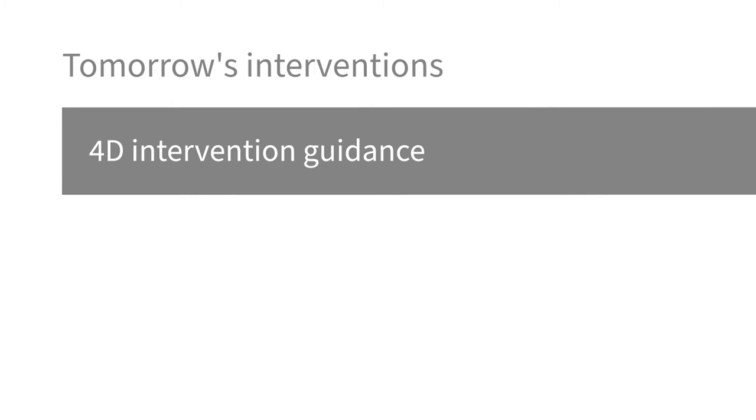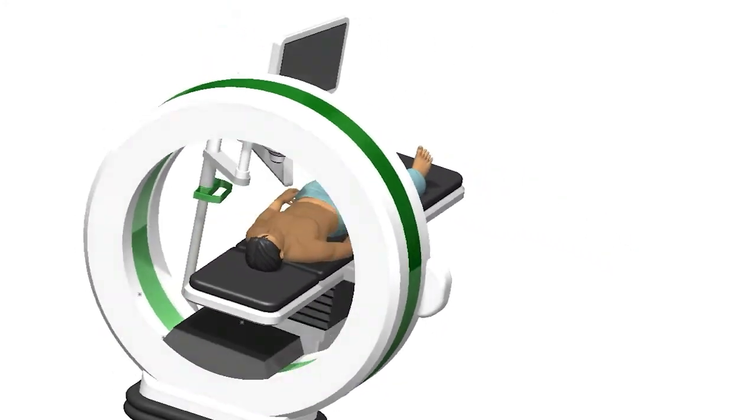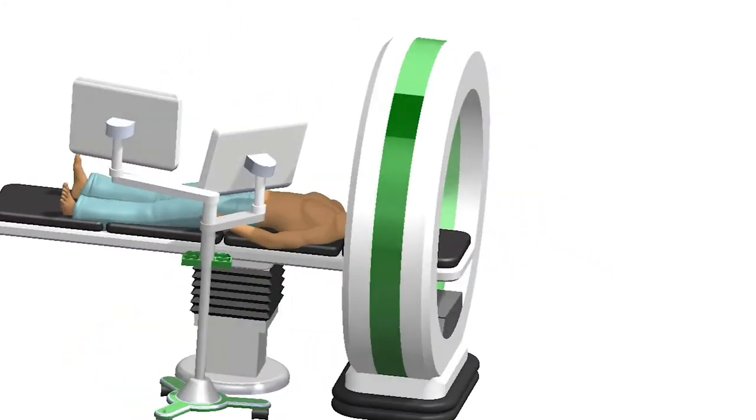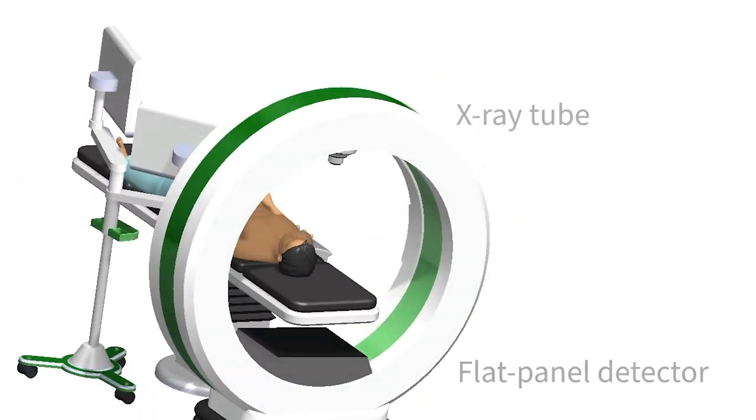For 4D intervention guidance, imagine a wide-bore CT-like scanner combined with a CAT-LAB setup. The imaging equipment on the gantry will be very similar to a setup that is being used in C-arm systems for fluoroscopy. Basically, a flat detector and an X-ray source.